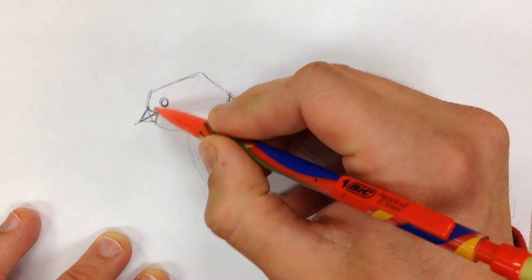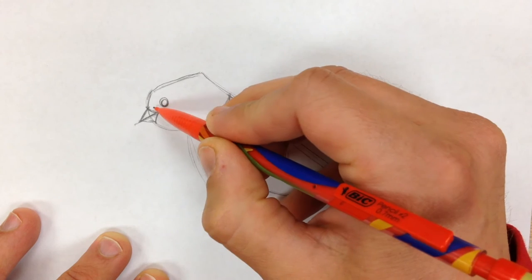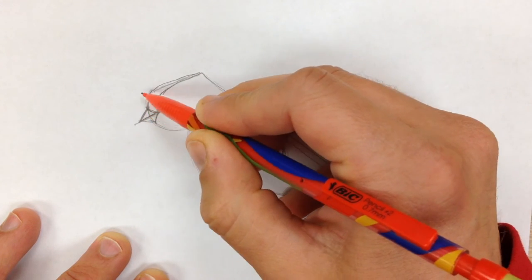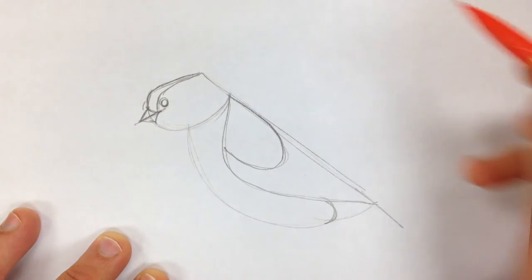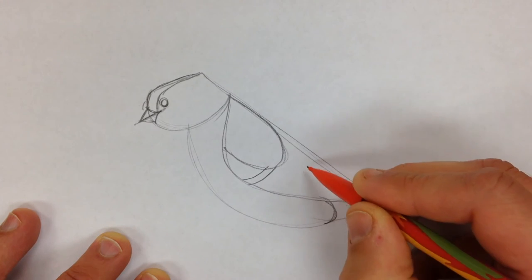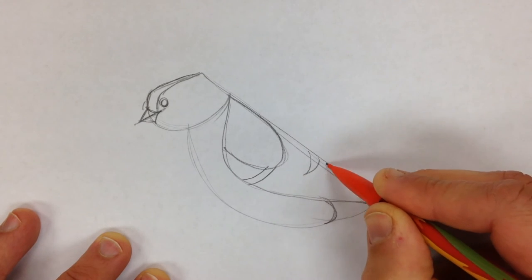Next we'll add the markings on the top. Kind of round that head out a little bit. I'm going to bring this over here, and then I'm going to add in some more of those markings this way. Some of them are going to be white, some are going to be black.